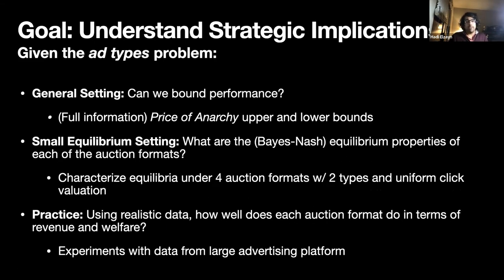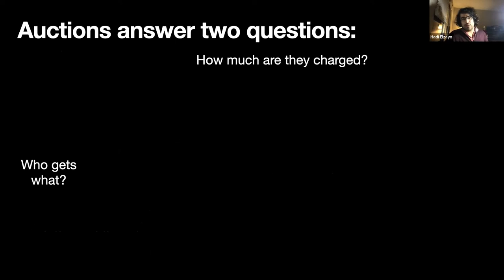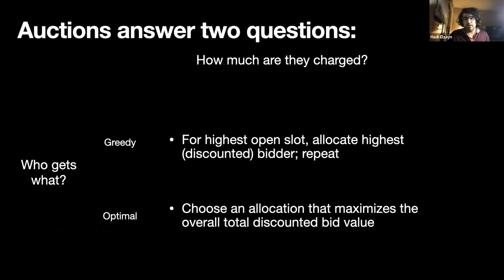We'd like to understand what we can about strategic implications. In particular: can we talk about performance bounds and price of anarchy in general? Can we characterize equilibria even in a small setting? And then using realistic data, what can we say about revenue and welfare in practice? The experimental part is also pretty cool — we're using data from an unnamed large advertising platform. The way we're thinking about this is that auctions have to answer two questions: who gets what, and how much are they charged? In terms of allocation, we can talk about greedy allocation or the optimal allocation that maximizes the overall total discounted bid value.